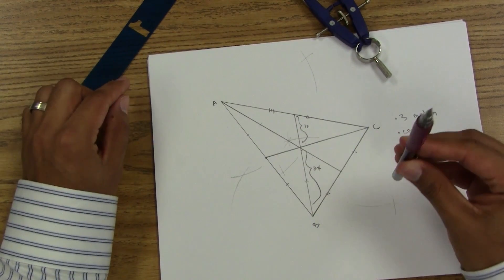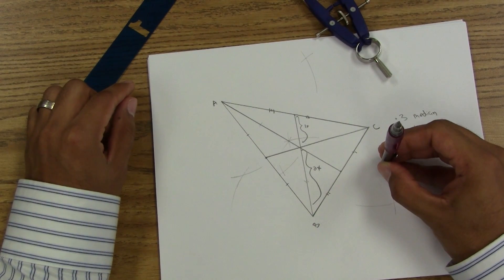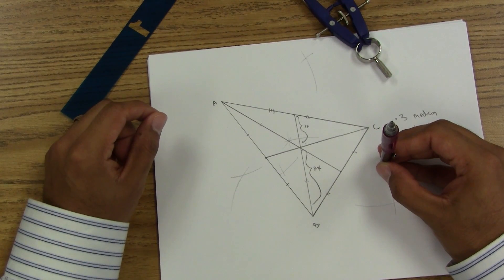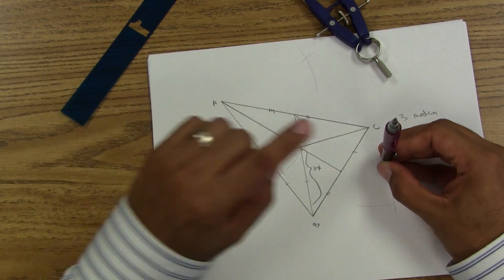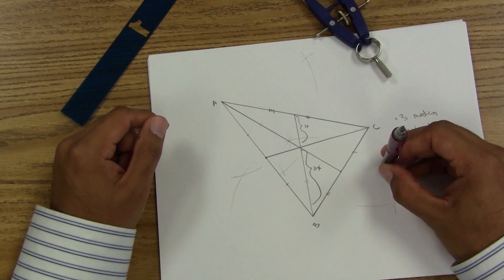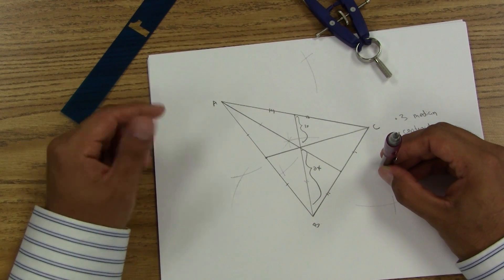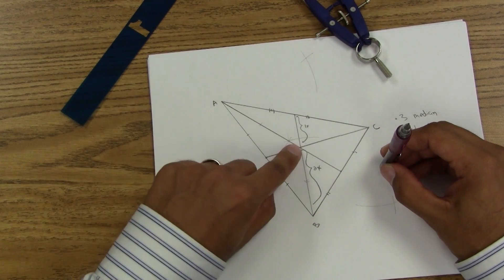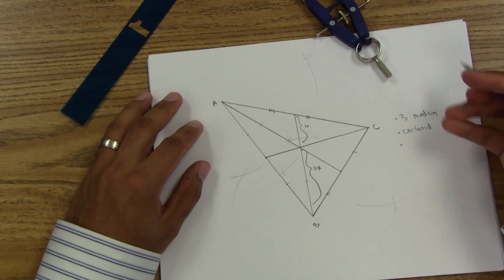And you can go ahead and put your pencil just like this and put your triangle on top of your pencil, so that your pencil is touching the centroid. You should notice that your triangle is balanced. That's because your centroid is the center of gravity.